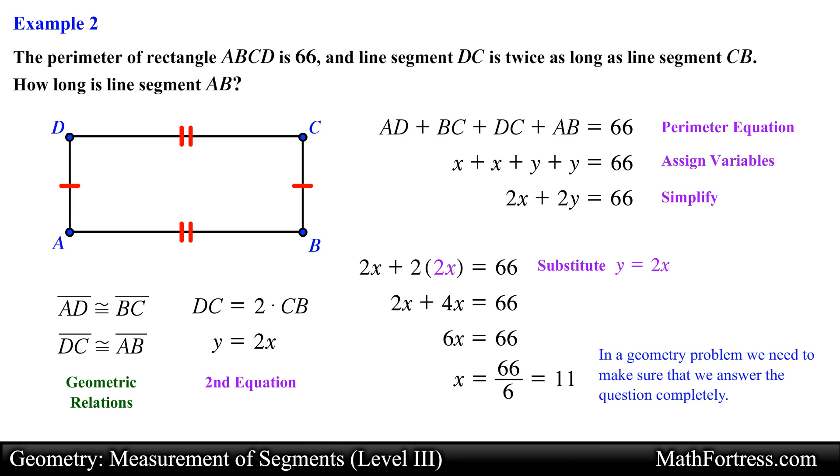So we know from the facts that segment DC is twice the length of segment CB. Since the length of line segment BC is 11, then the length of line segment AB is equal to twice this number, in this case 22. So this is our final answer.